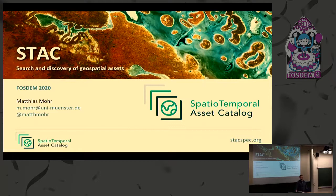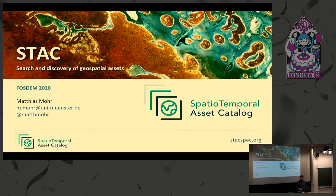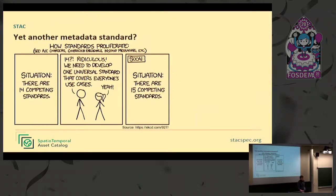If you have data and want to expose it to search engines so users can find it, you need to know a metadata standard and expose it, or write XML and things like that. You also need to understand the metadata format. We're trying to tackle that with a focus on search and discovery. We may get trapped — if there are 40 metadata standards and we add a new one, now there are 41 — but we tried to avoid this and gave good reasons for why we're doing this.